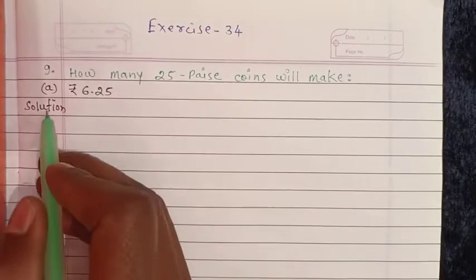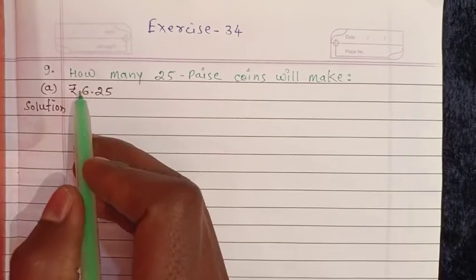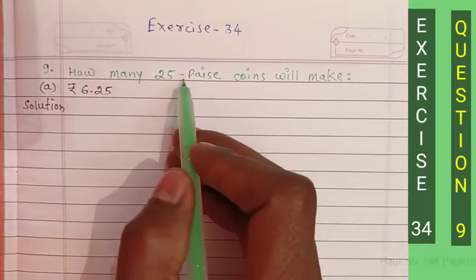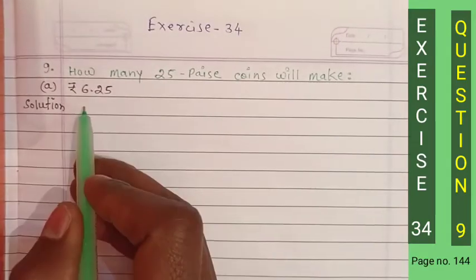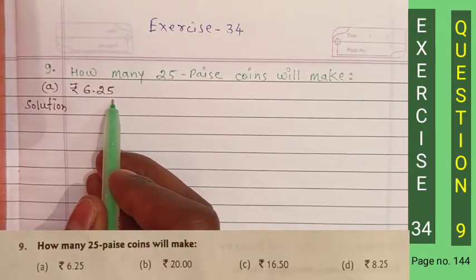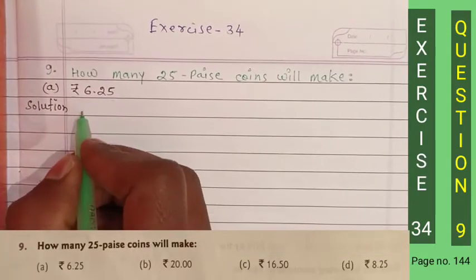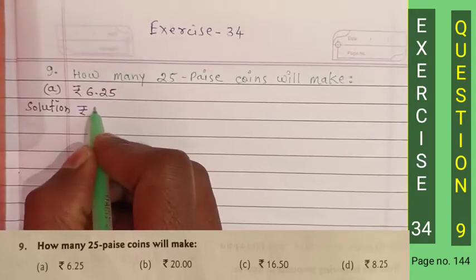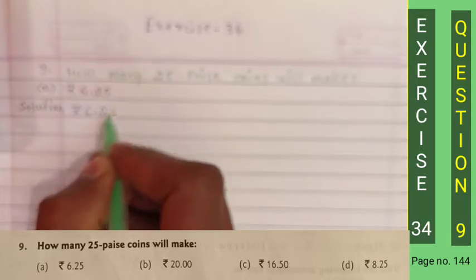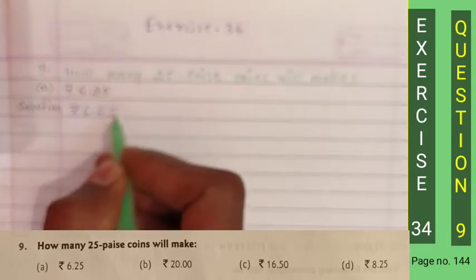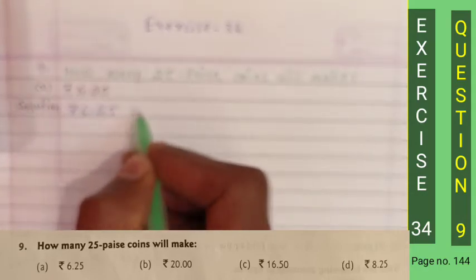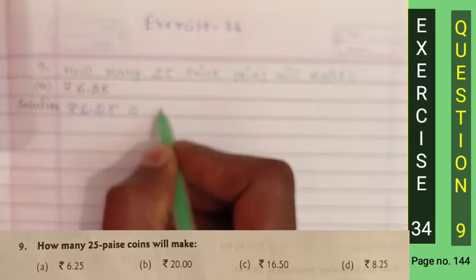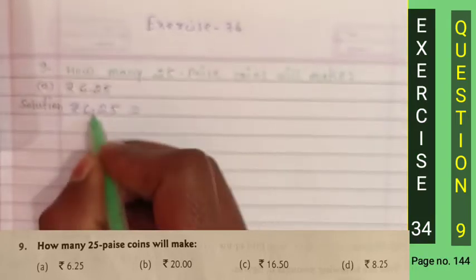In question number nine, we have to find how many 25 paise coins make 6 rupees and 25 paise. As we have learned, to find 25 paise coins from 6 rupees and 25 paise, we first convert the amount into paise. To convert, we remove the decimal point.